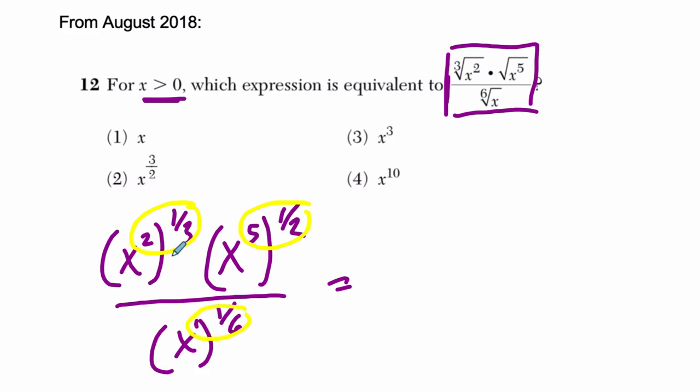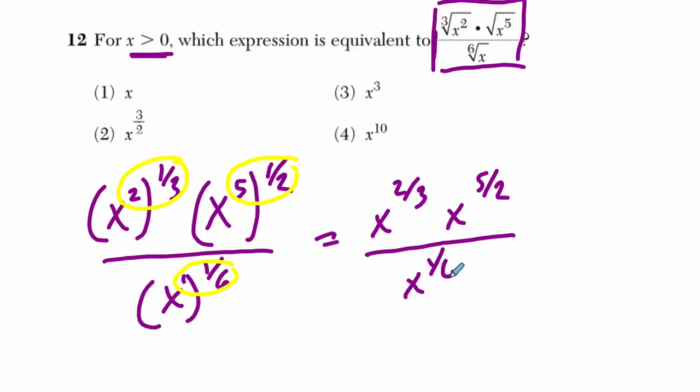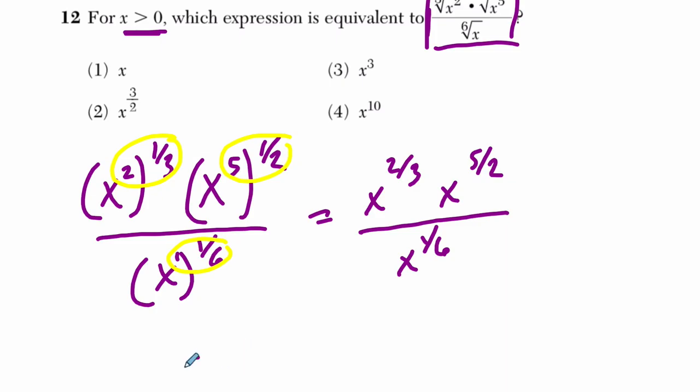So now we simplify this using our laws of exponents. Here we're going to multiply these exponents, the classic law of exponents. Here's an exponent of 1, multiplying a sixth by 1, and we have 2 times 1 third is 2 thirds, and then we have 5 times 1 half is 5 halves, all over x to the 1 sixth. So all I did was apply the law that a to the m to the n equals a to the m times n.